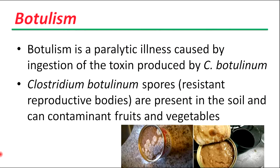Botulism is a fatal illness caused by ingestion of toxins produced by Clostridium botulinum. Death results from muscle paralysis and respiratory failure. Clostridium botulinum spores are present in the soil and can contaminate fruits and vegetables. Spores will not germinate in the presence of oxygen or in acidic conditions, but can germinate in sealed jars of low-acid foods such as asparagus, green beans, beet, and corn, if not destroyed by temperatures above boiling achieved under pressure during the canning process.